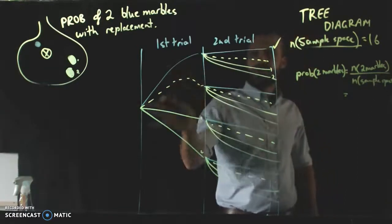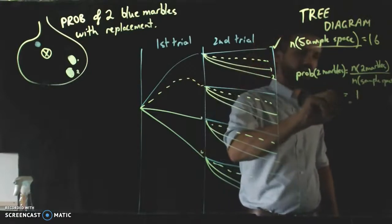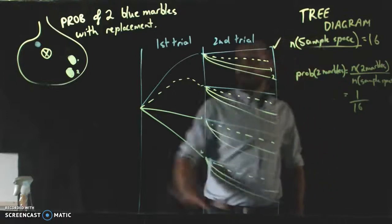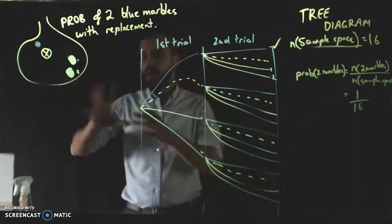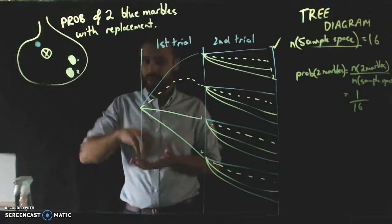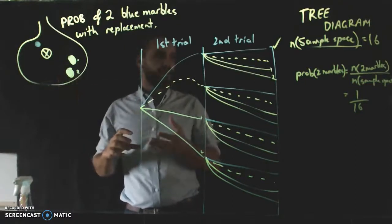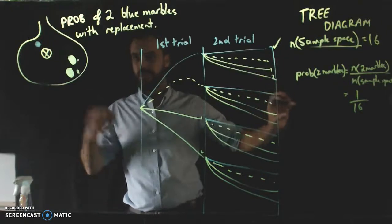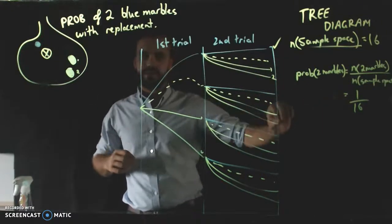And two blue marbles only happens once. And the size of the sample space is 16. So, if you reached into that bag of marbles, and you pulled them out, looked at it, put it back, pulled it out, looked at it, the probability of getting exactly two blue marbles from that trial would be one in 16.